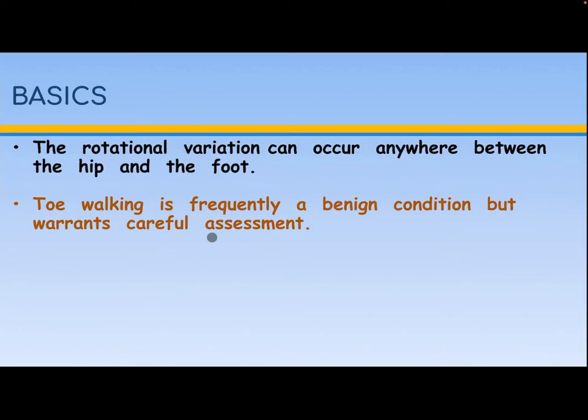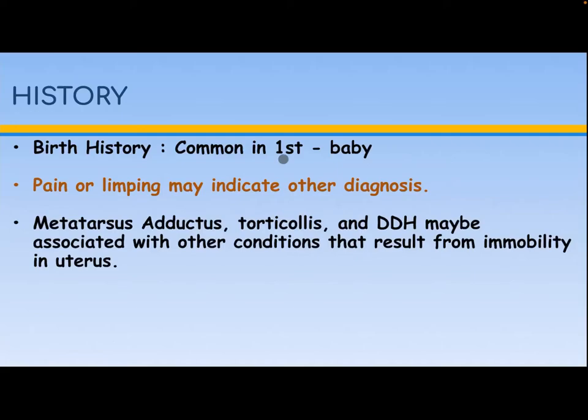History: birth history — it is common in first-born babies. Pain or limping may indicate another diagnosis. Metatarsus adductus, torticollis, and developmental dysplasia of the hip may be associated with other congenital conditions that result from immobility in utero.